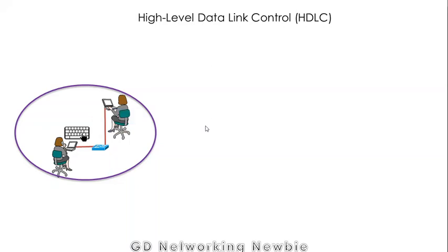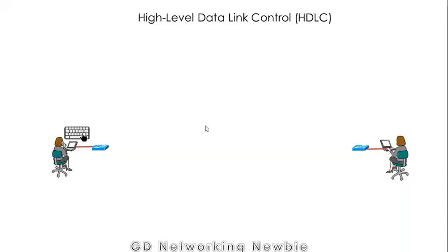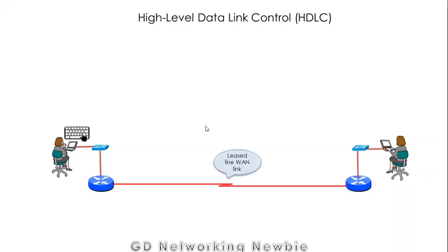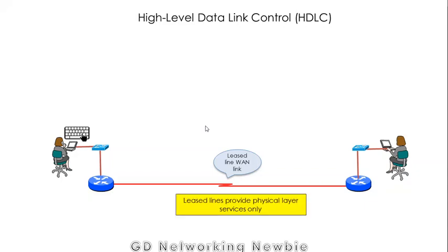But if the second user is far away — for instance, in another country — we need a wide area connection between them. A leased line is one possibility to connect these two users. The job of the leased line is to carry zeros and ones, providing physical layer services. The physical layer works like a water pipe — information just flows on the physical link.